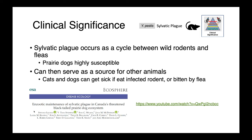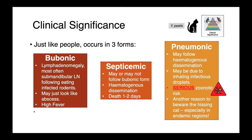In cats, this is potentially a very serious infection. Just like in people, plague occurs in three forms. There's bubonic plague, where we see lymphadenomegaly, often the submandibular lymph nodes, and this is associated with eating infected rodents. The organism gets into the body through the mouth and affects those most proximal lymph nodes. It's important to know that this may just look like abscesses, so with outdoor cats who are potentially fighting, it could be difficult to distinguish.